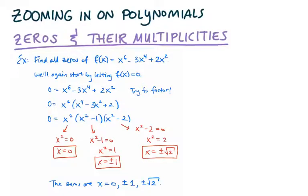In our last video, we found the zeros for the polynomial function shown on the screen. We found the zeros to be x equals 0, x equals plus or minus 1, and x equals plus or minus the square root of 2. We have a little bit of unfinished business with these zeros, so we'll pick up here and use this video to explore zeros and their multiplicities.